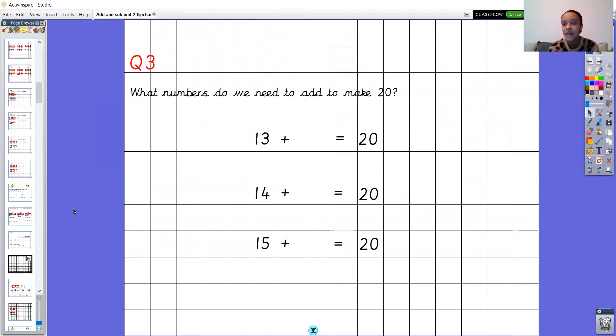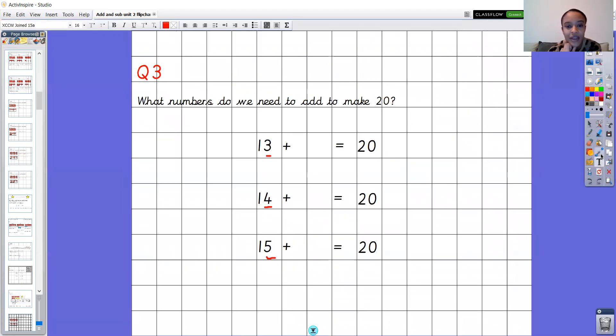Okay right let's move on. Question number three, we're thinking about those number bonds to 20. So remember there are three questions here of missing numbers. Remember we can use our number bonds to 10 to help us with our number bonds to 20. So if you look at that ones number, it'll help you to find out what you add. So all you need to think about is what you add to those numbers to get 10. That's going to be the same number you add to get to 20. Pause the video now and have a go at that.